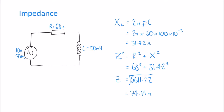Now that we know the impedance of this circuit, we can calculate the current flowing through it. Using a modified version of Ohm's law, instead of I = V/R we use I = V/Z — voltage divided by impedance. In this case the voltage is 10V and the impedance is 74.91 ohms, giving a current of 0.133 amps, or 133.49 milliamps to be exact.